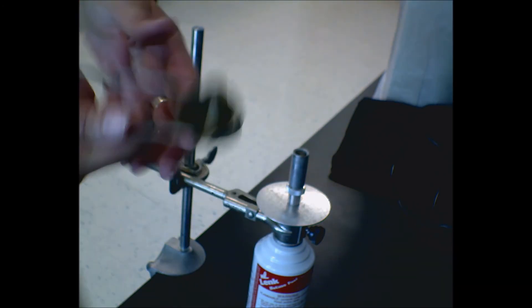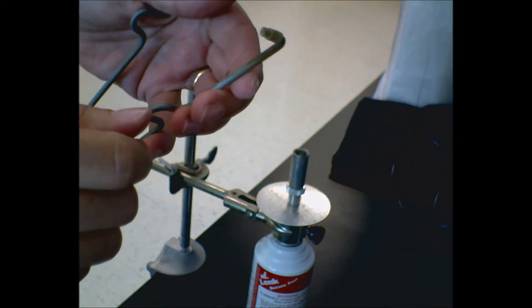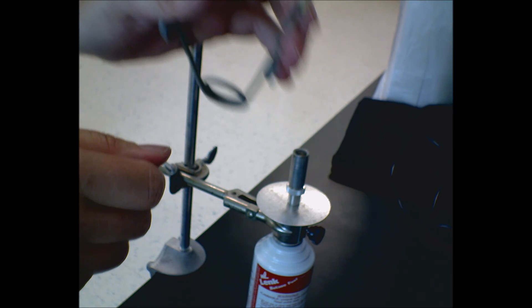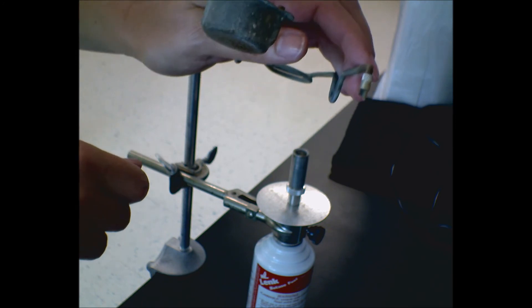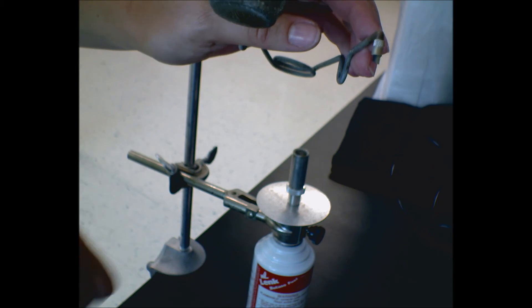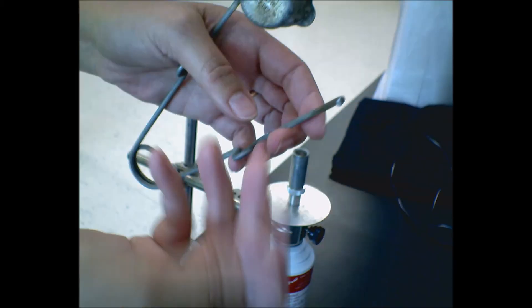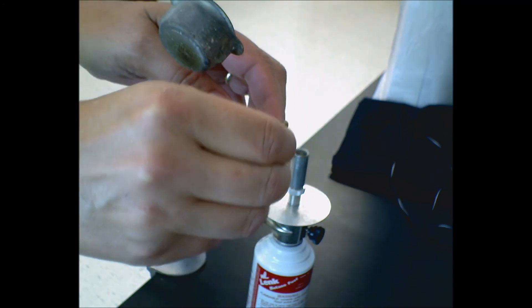I'm going to use this. This is a striker. There is a piece of flint on there. If you ever read Hatchet, the kid found a piece of flint rock and he used it to make sparks and start fire. When the flint wears out, these can be replaced and you put a new one on.